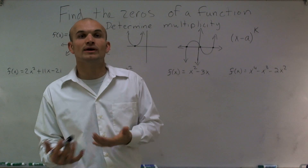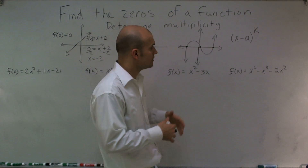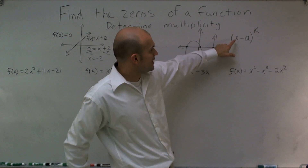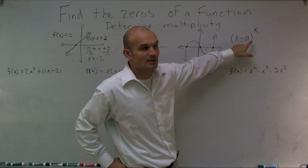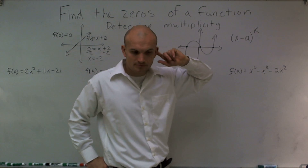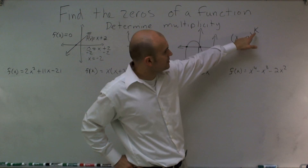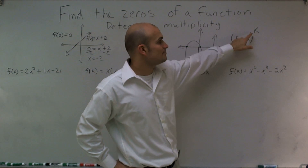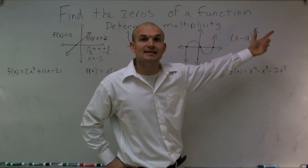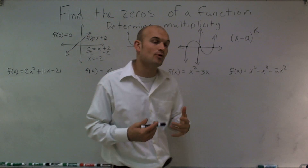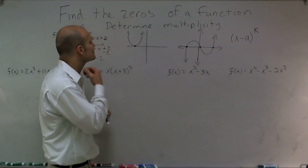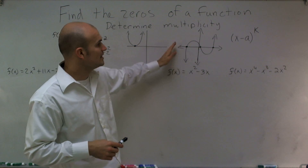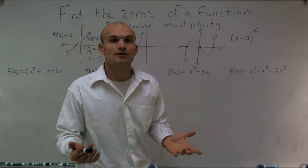So how are we going to determine when it's odd or when it's even? When we do our factoring, we're going to get a certain set of factors like (x minus a number) raised to a power. If my power is odd, then we say it has an odd multiplicity. If my power is even, we say it has an even multiplicity. When it's even multiplicity, it's going to touch the graph but not cross. When it has an odd multiplicity, it's going to cross.